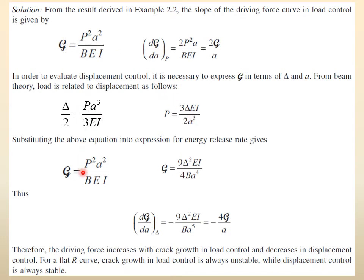We substitute P = 3 E I delta / (2 a³) back into G. Since it is P squared, we get 9 delta² and so on. After substitution and simplification, G now becomes an expression in terms of delta, containing a factor of 1/a⁴. We then take dG/da again — this time under constant delta. The term a⁻⁴ differentiates to −4/a⁵, while all other terms — 9 delta² E I / (4B) — remain constant.